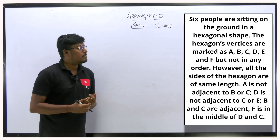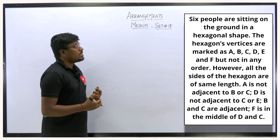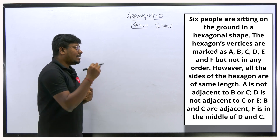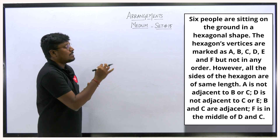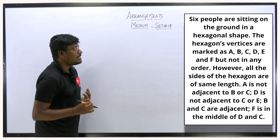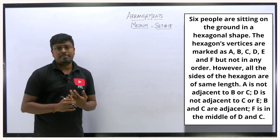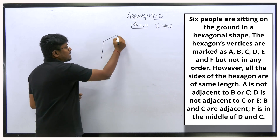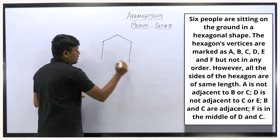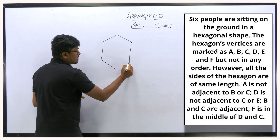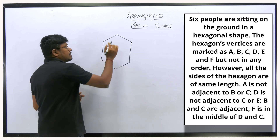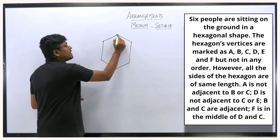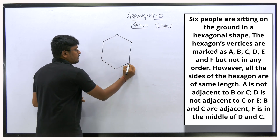Now let me move on to set number 15, medium level. Six people are sitting in a ground in a hexagonal shape. The hexagonal vertices are marked as A, B, C, D, E, and F, but not in the same order. This arrangement is based upon a hexagon, which has six sides. These corner points are called vertices.